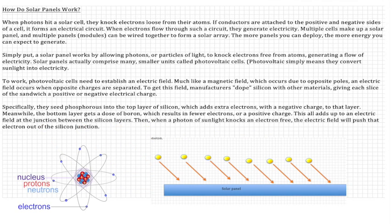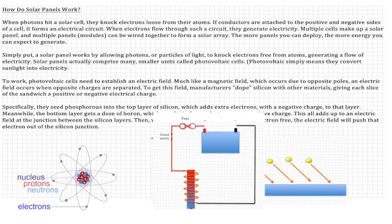Okay, you're asking, so how do solar panels actually work? Well, when the photon hits a solar cell, they knock electrons loose from their atoms.